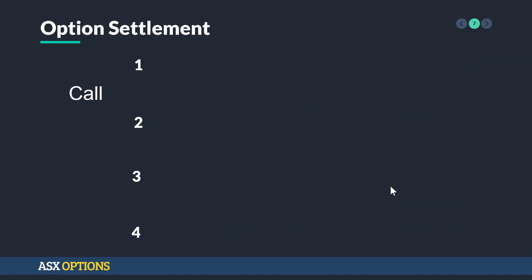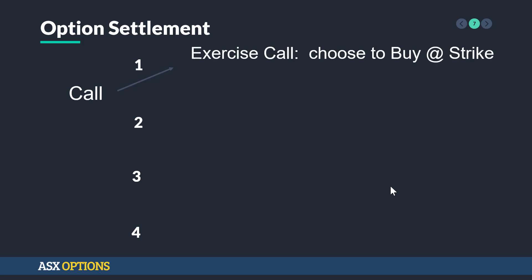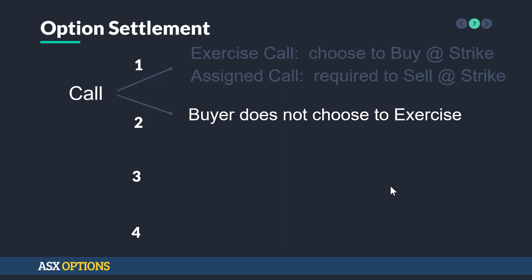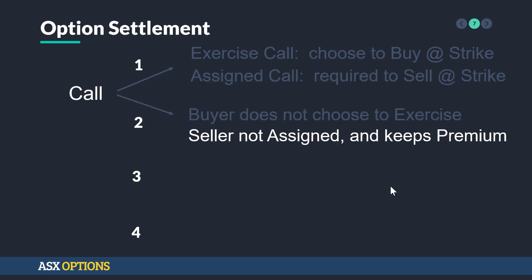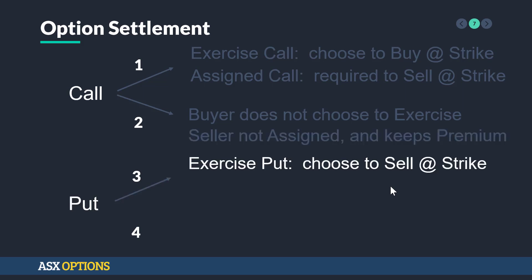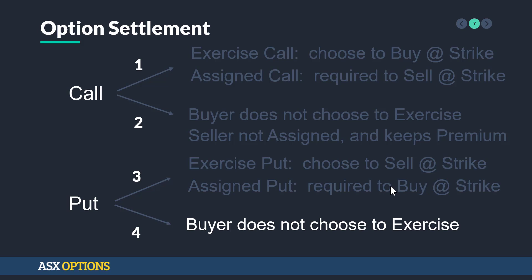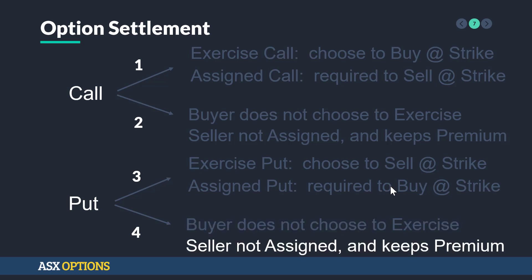To summarize: with a call, either the buyer exercises — and the seller is assigned and required to sell at a given strike — or the buyer does not exercise and the seller is not assigned. Similarly with a put, if the buyer chooses to exercise, they sell at that given strike and the seller is assigned and required to buy at that strike. There's also the scenario where the buyer does not exercise and the seller is not assigned.